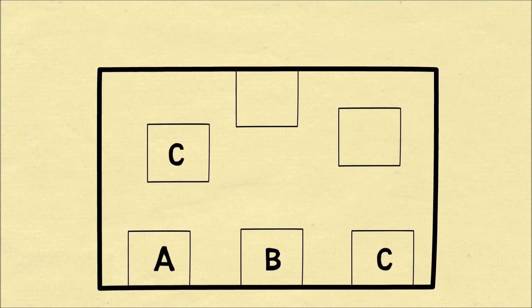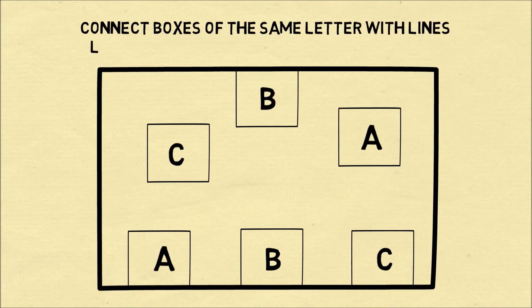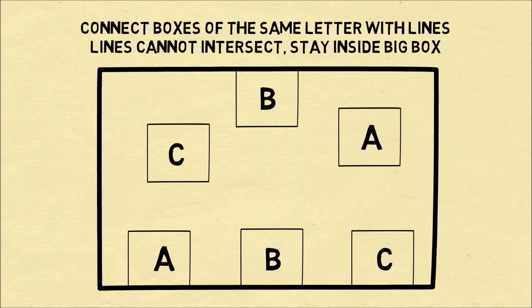In the second puzzle we have six different boxes labeled A, B, and C. The problem is to connect all of the boxes that have the same letter with lines and the lines cannot intersect and you have to stay inside of the big box.